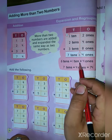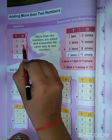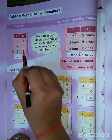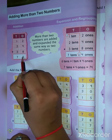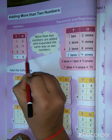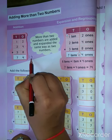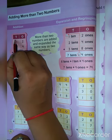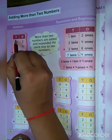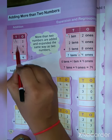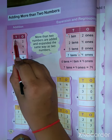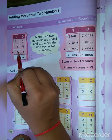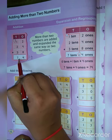Let's see the first example. 2 plus 4 is equal to 6. 6 plus 8 is equal to 14. So we put here 14 — that means we put 4 in the ones position and carry over 1. Then we add: 1 plus 1 is 2, 2 plus 2 is 4, 4 plus 3 is equal to 7.